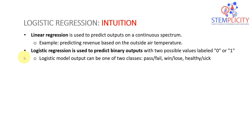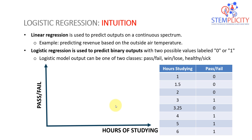Let's pick an example. Let's assume we have a basic example where on the x-axis the independent variable is hours of studying — one hour, one and a half hours, two hours, and so on. On the y-axis, we have expectations: either pass or fail. Fail is labeled as zero and pass is labeled as one.